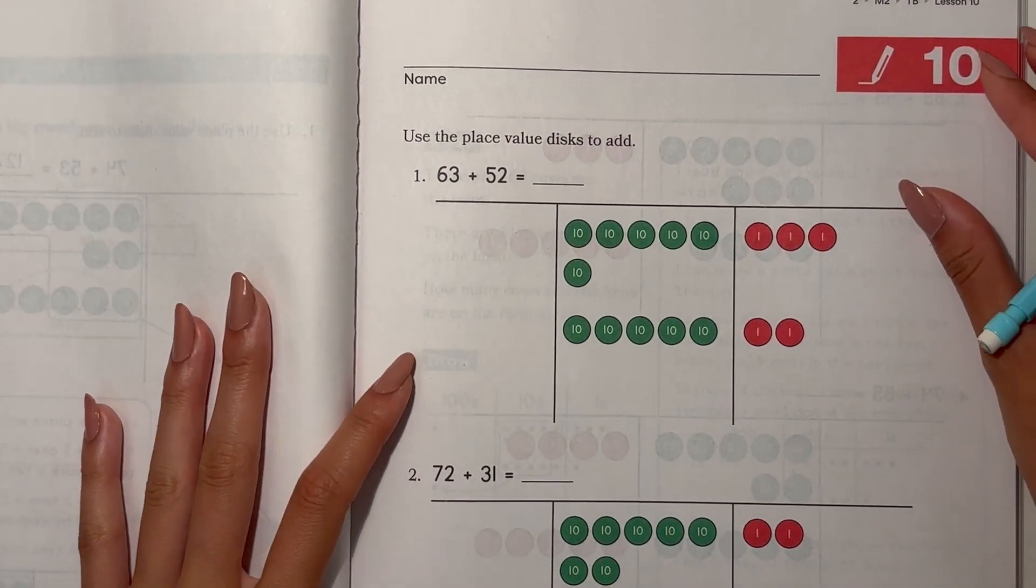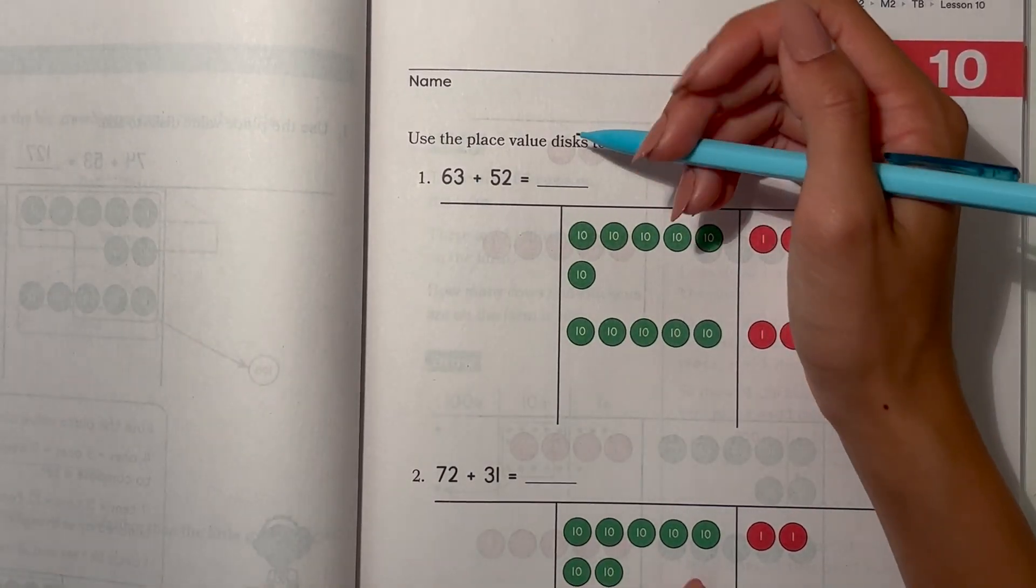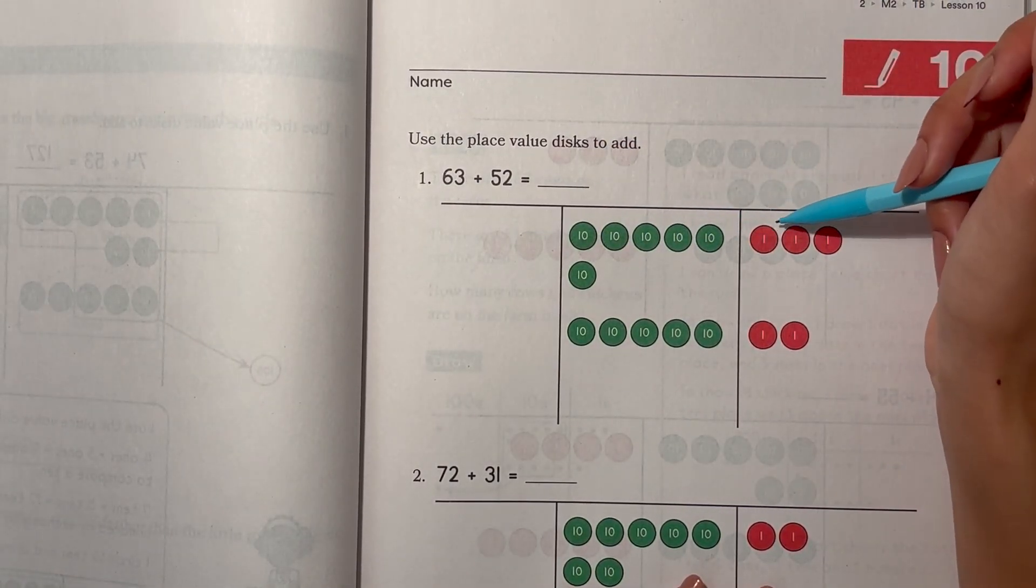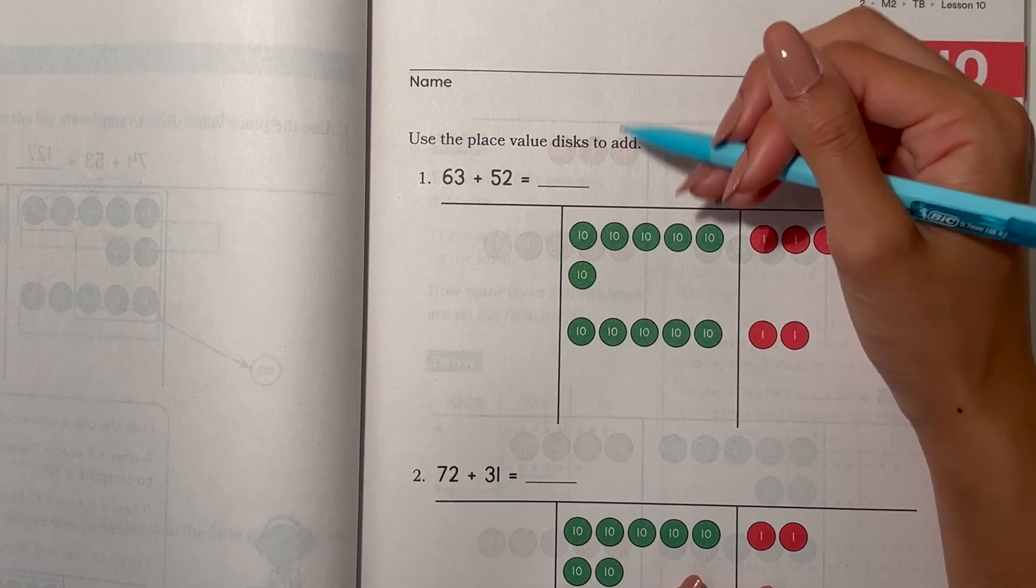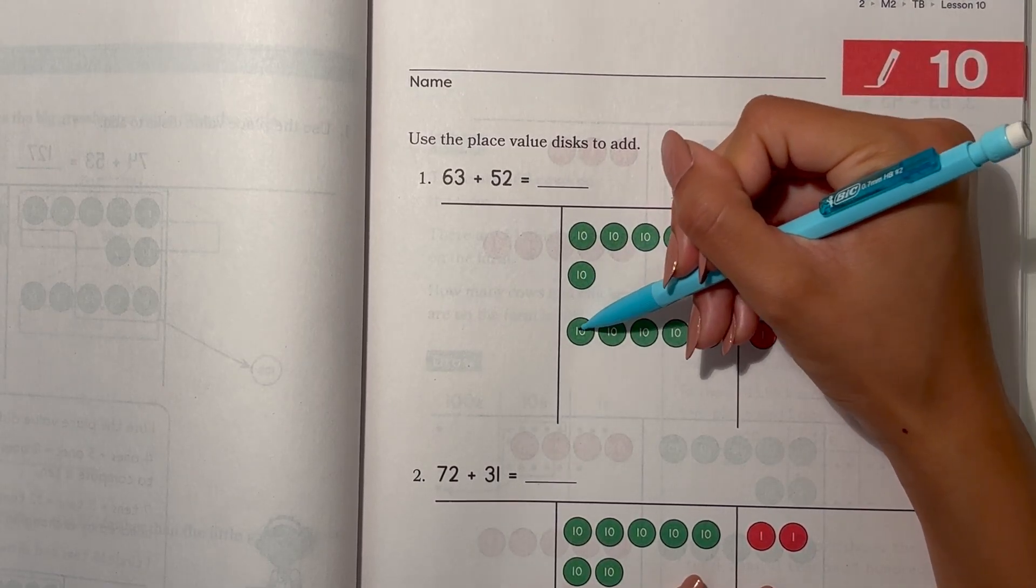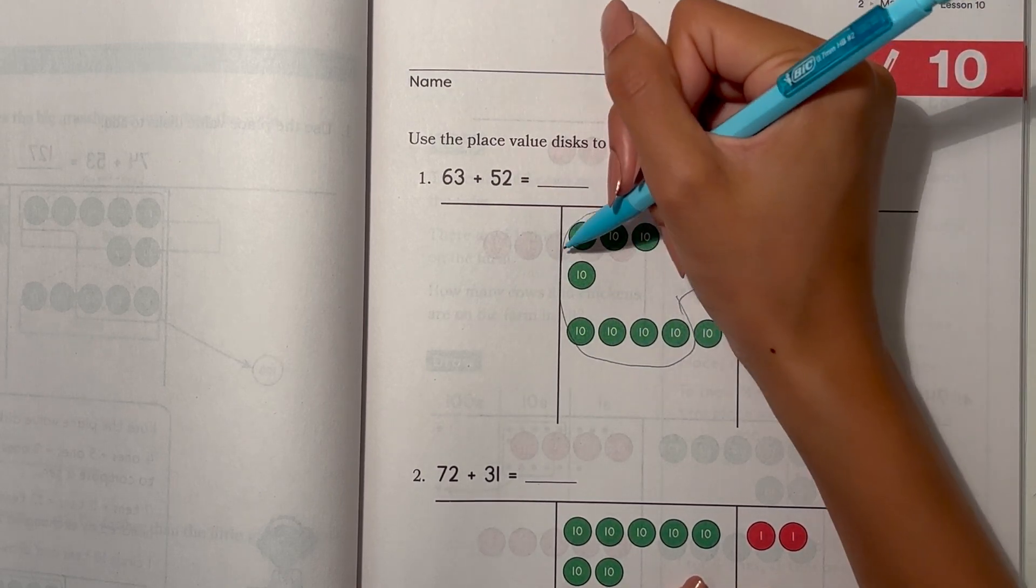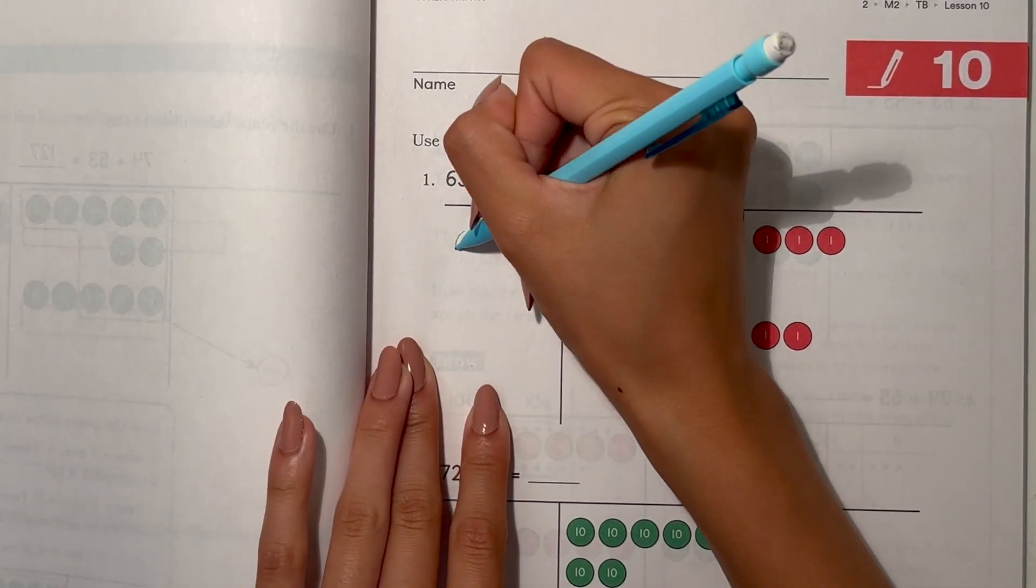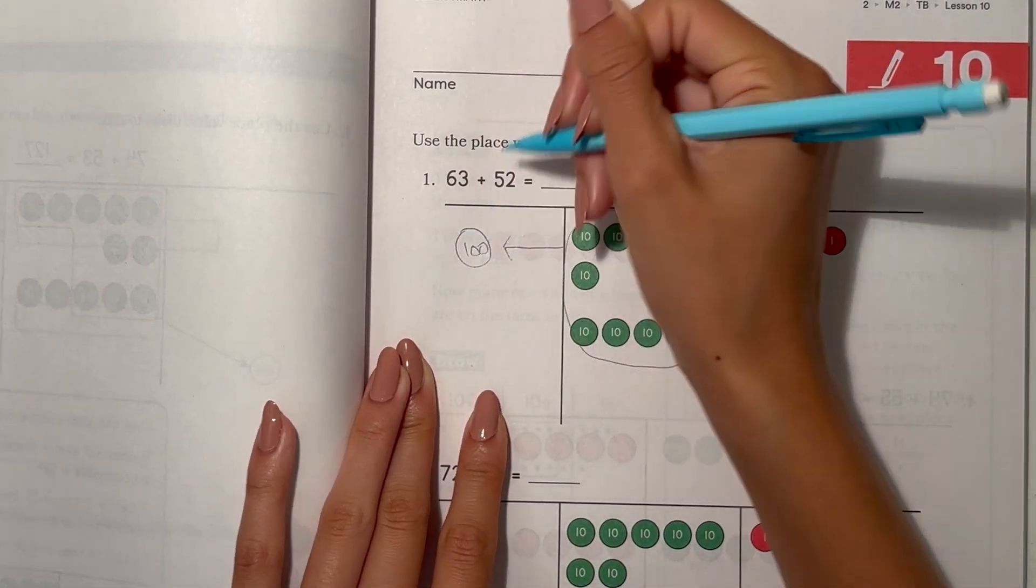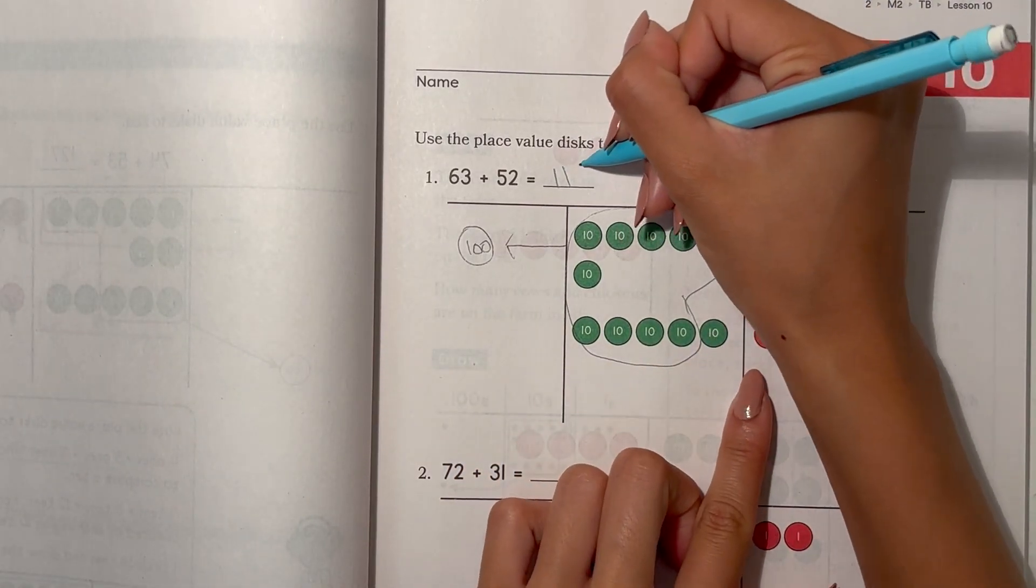They drew it out for us. 63 plus 52. Regroup the tens. 1, 2, 3, 4, 5, 6, 7, 8, 9, 10. This becomes 100. Now this is 100, 1 ten, 5 ones, 115.